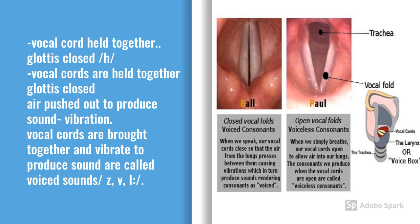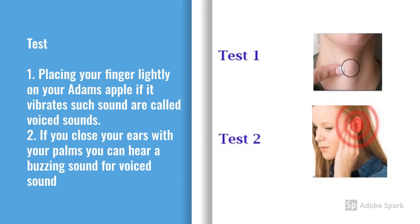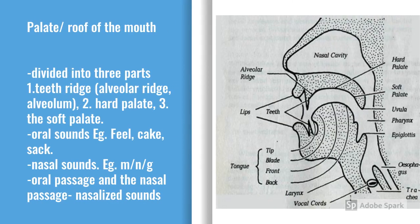We can distinguish between voiced and voiceless sounds with the following test. Place your finger lightly on your Adam's apple — if it vibrates, such sounds are called voiced sounds. If you close your ear with your palm, you can hear a buzzing sound, which is a voiced sound.